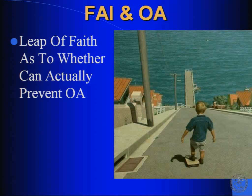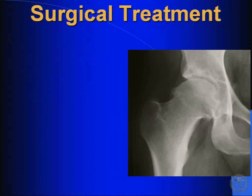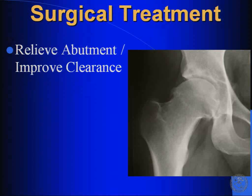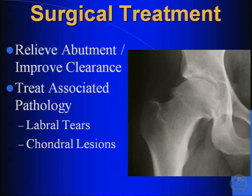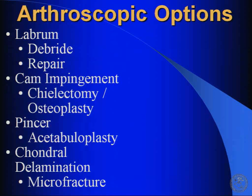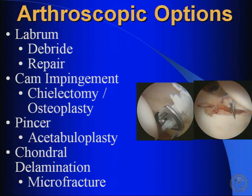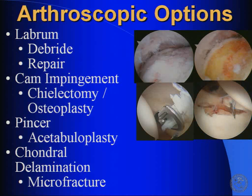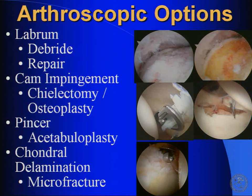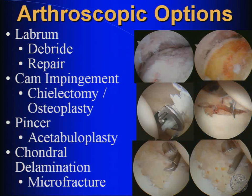It's a leap of faith as to whether we can actually prevent osteoarthritis — I don't know of an operation yet that prevents arthritis. What you want to do is relieve the abutment and improve the clearance to help the range of motion, and also treat the associated pathology — the labral tears and the chondral lesions. With the labrum, your options are to debride or to repair. For the CAM lesion, you do a chielectomy or osteoplasty. For the pincer lesion, you do your acetabuloplasty. For the chondral lesion, you do either abrasion or microfracture.